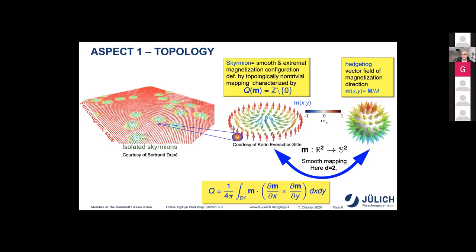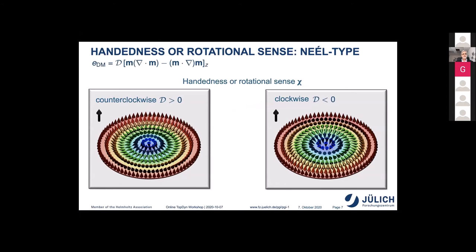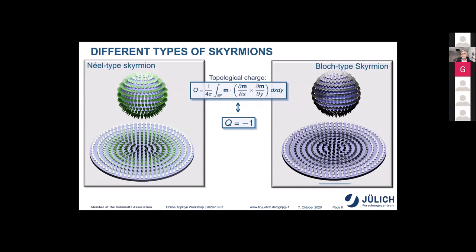Skyrmions have different handedness. For example, when you go from inside to outside of the magnetization texture, the magnetization can rotate counterclockwise or clockwise. We have different types of skyrmions: Néel-type skyrmions, where the magnetization rotates in the plane of the z-component and the radius, and Bloch-type skyrmions, where it rotates at angle phi and the z-component.